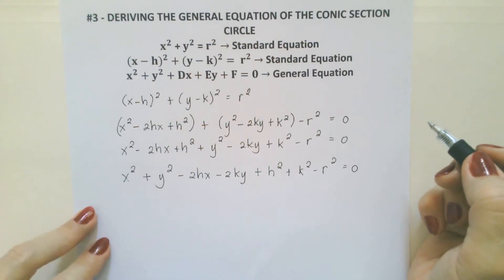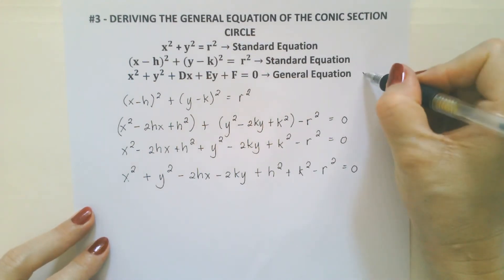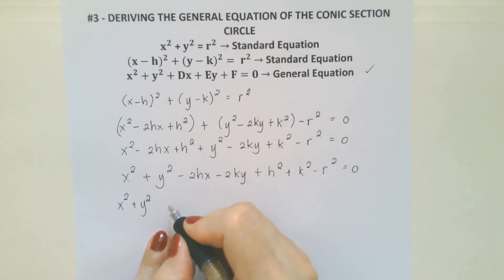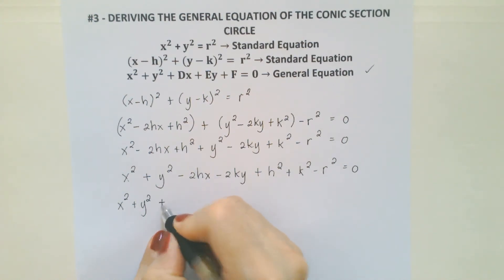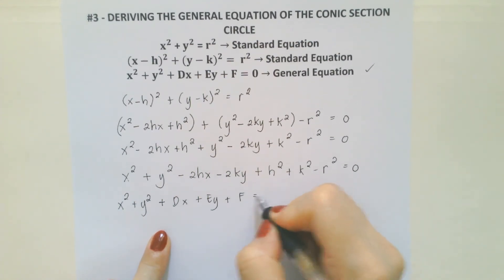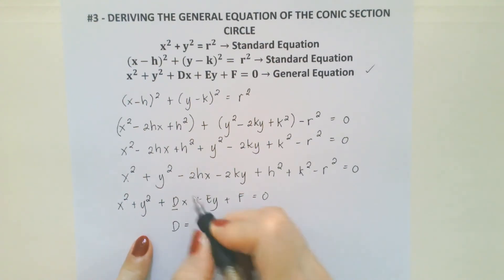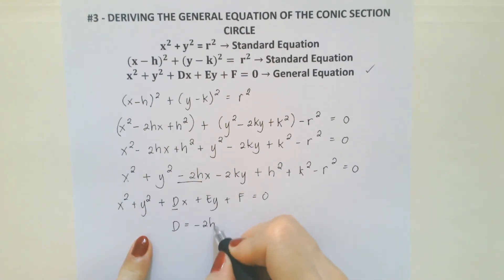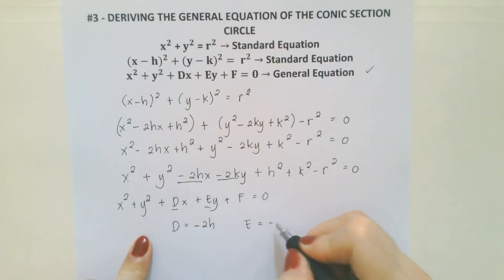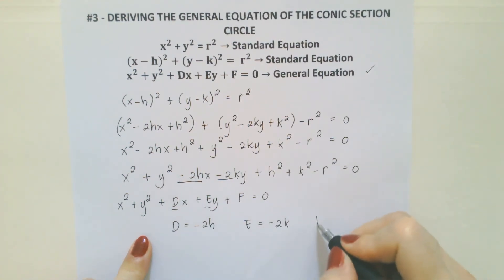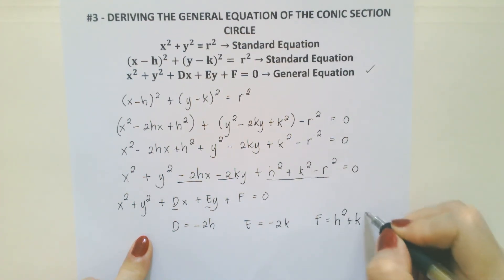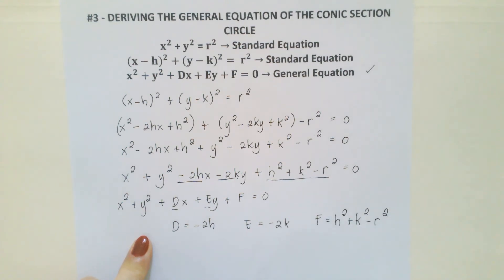How are we going to relate this derived equation to the general equation? Therefore, x squared plus y squared plus dx plus ey plus f is equal to 0. The d here stands for negative 2h. The e stands for negative 2k. And f stands for h squared plus k squared minus r squared.